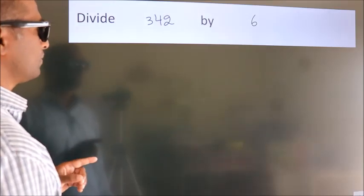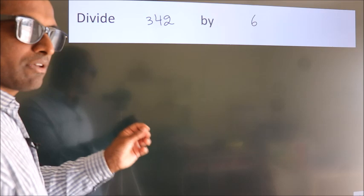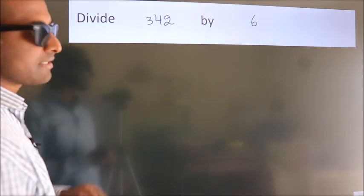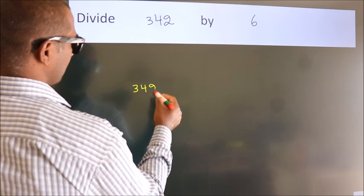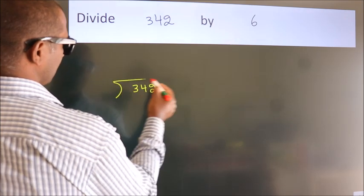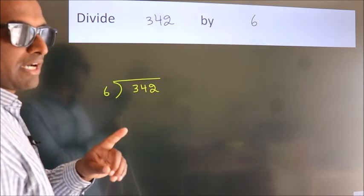Divide 342 by 6. To do this division, we should frame it in this way. 342 here, 6 here. This is your step 1.